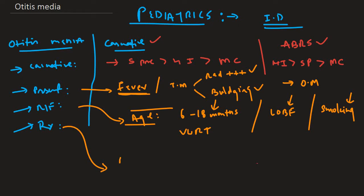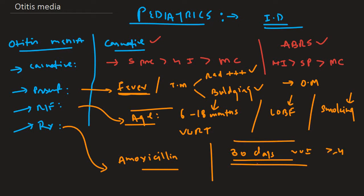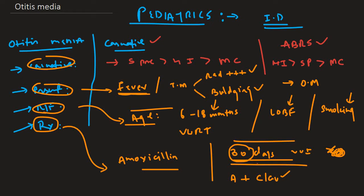Treatment for otitis media is amoxicillin. The important catch: if otitis media recurs within an interval of 30 days (4 weeks), you need to add clavulanate — giving amoxicillin-clavulanate — because there may be resistance from the previous amoxicillin course. So these are the key points for otitis media: causative organisms, presentation, risk factors, and treatment.